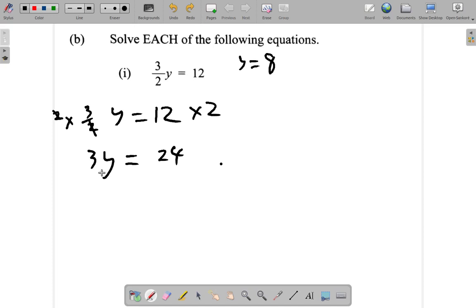I have 3y. I want y equal, not 3y equal. So what I do is get rid of the 3. I divide by 3.